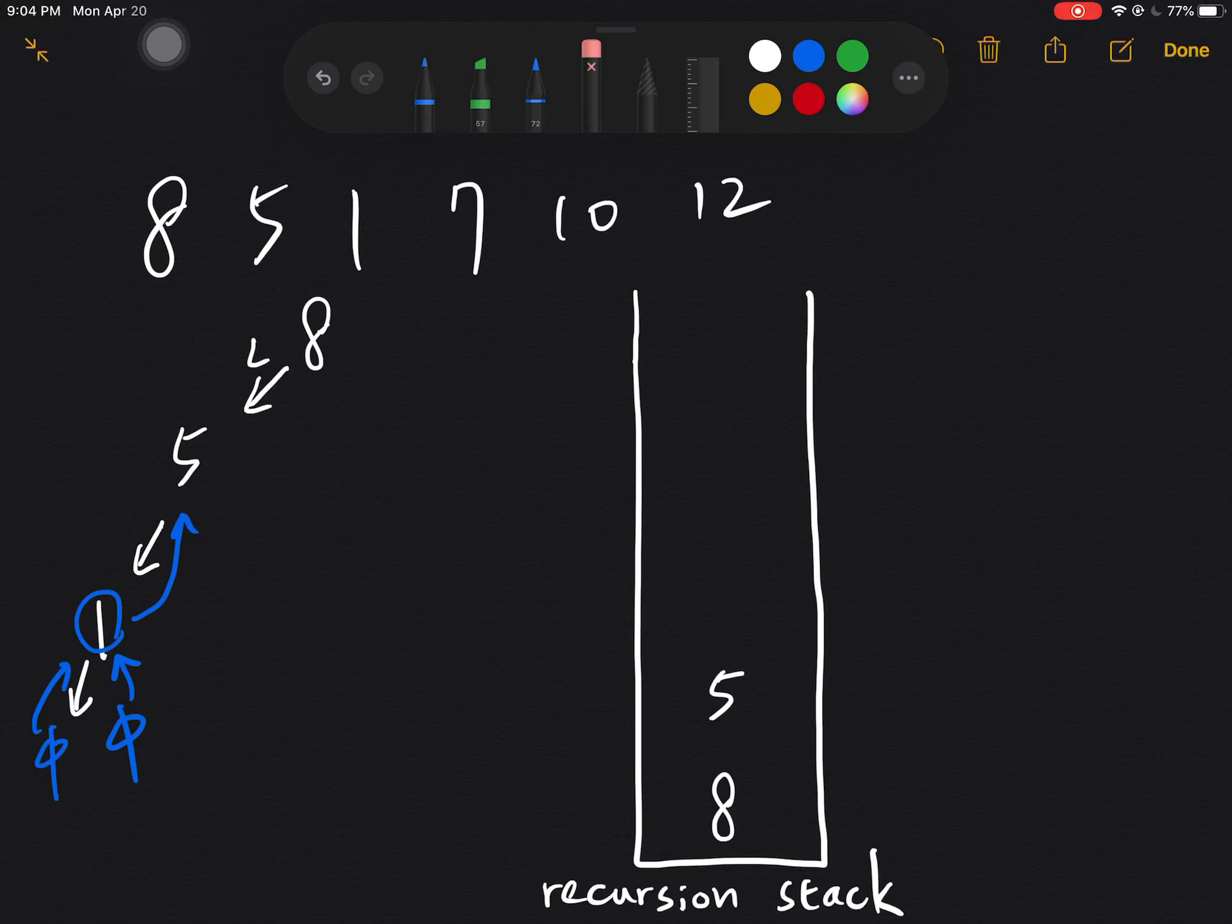And then 5 will call its right which is 7. So 7 will be constructed, and then 7 will call left but which will become null.